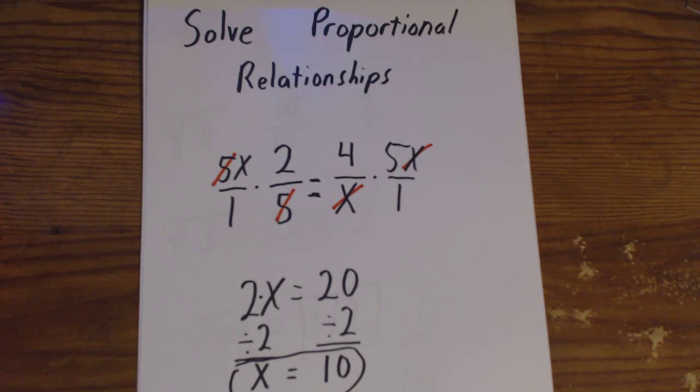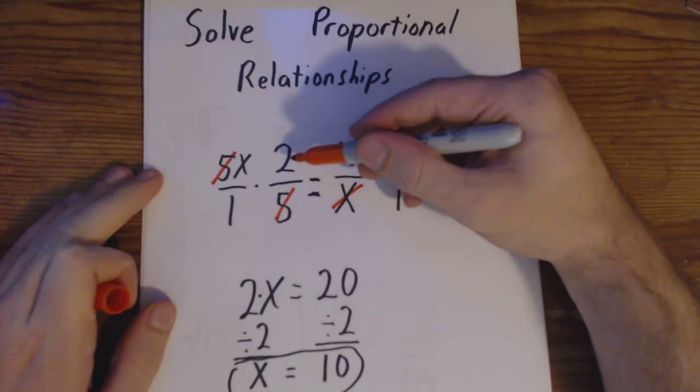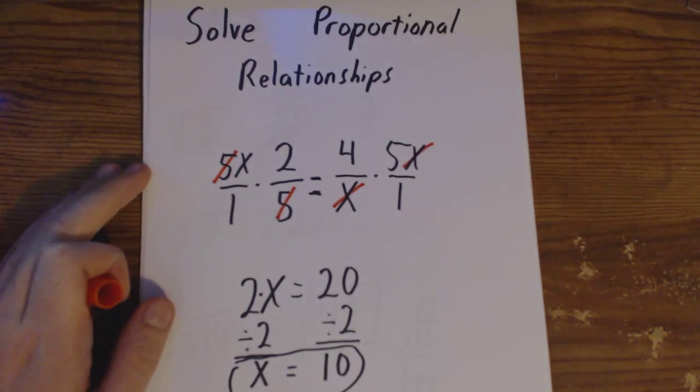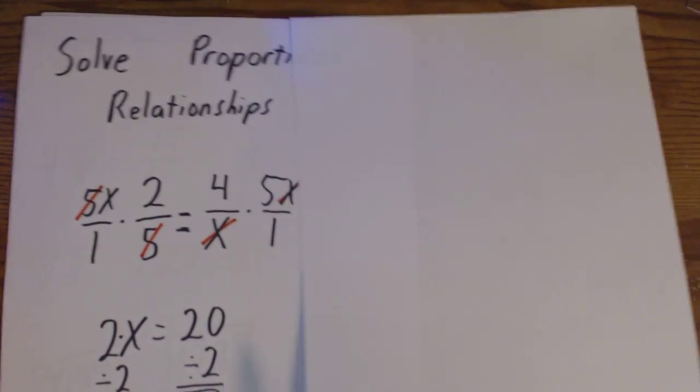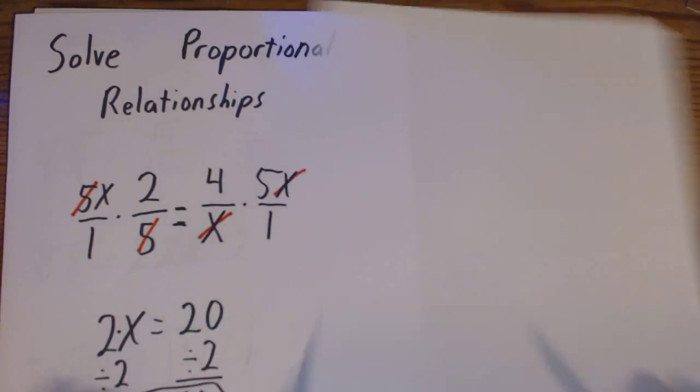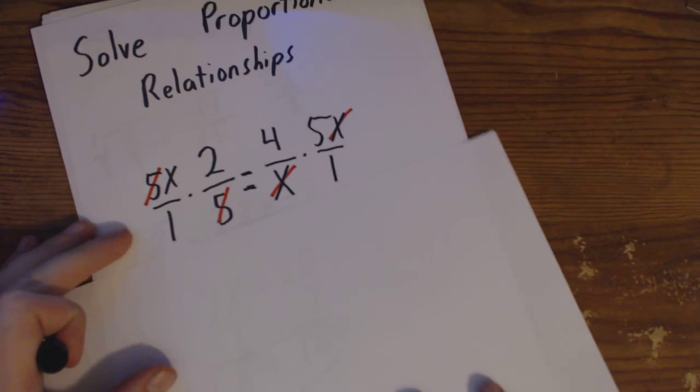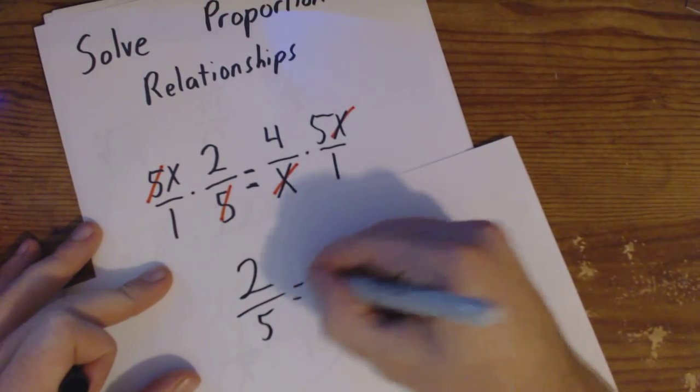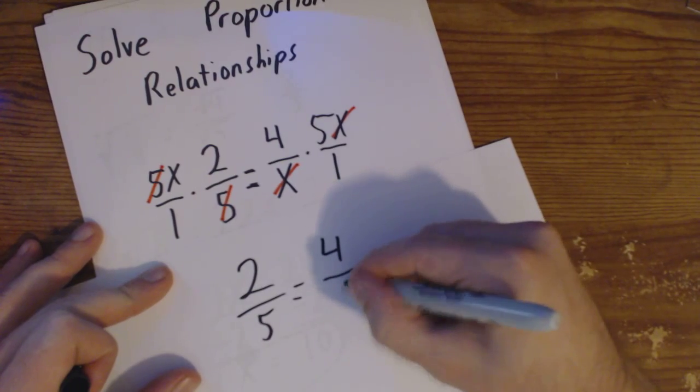Now I'm going to show you guys a little trick with what we just did here. If you look at this problem, we had 2 over 5 equals 4 over x. So let's rewrite this. Let's get a fresh piece of paper and see how this trick works.